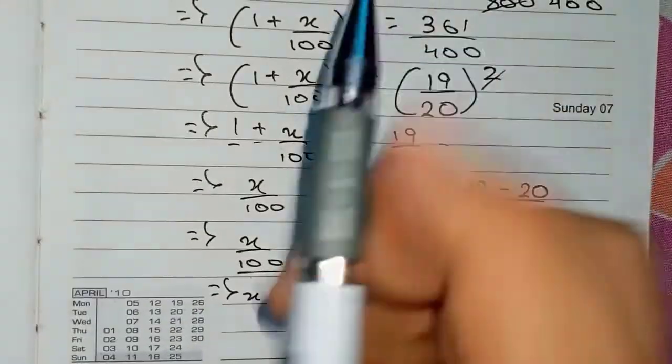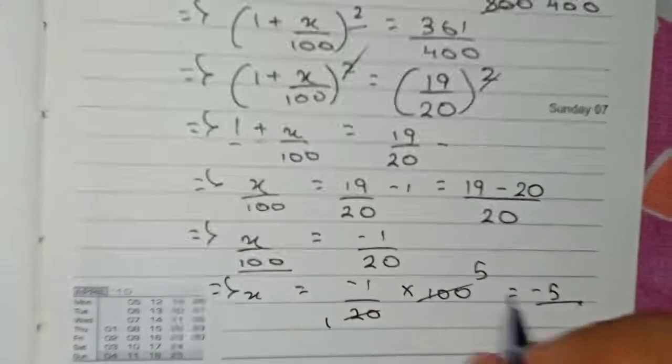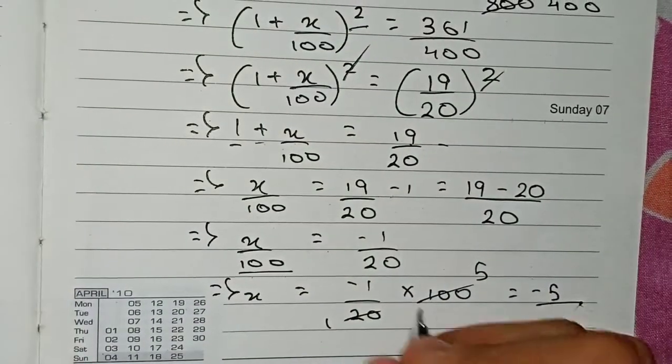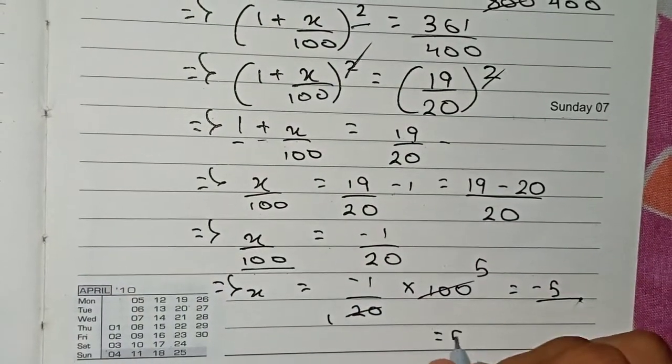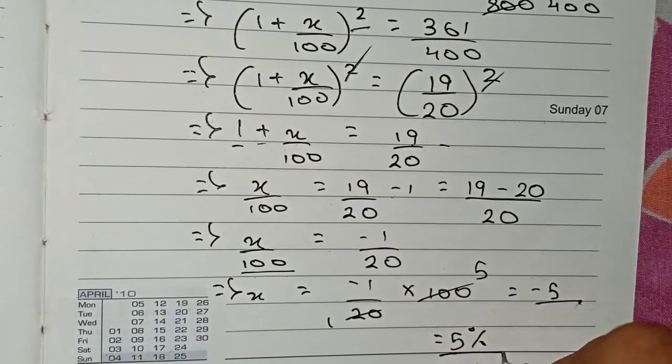In the question, it is given that it is depreciating, so the value of depreciation is given and we have to find the rate of depreciation. So 5 percent will be our answer. This will be our final answer for this question. Thanks for watching this video, and please subscribe to my channel for more solutions.